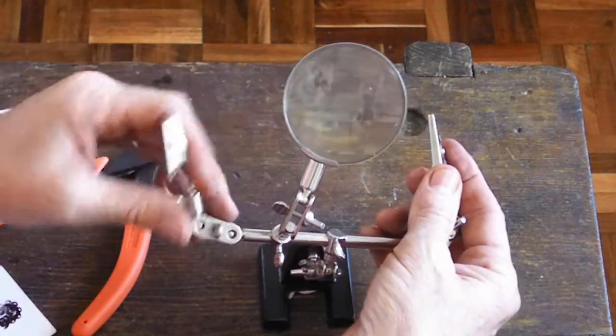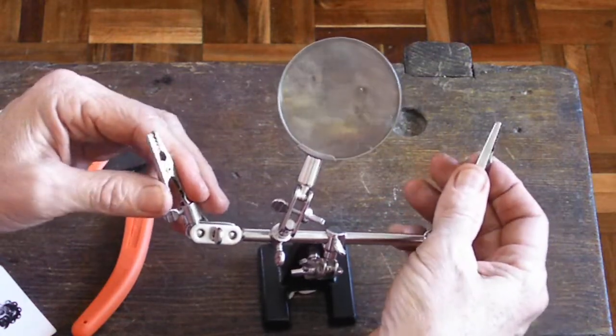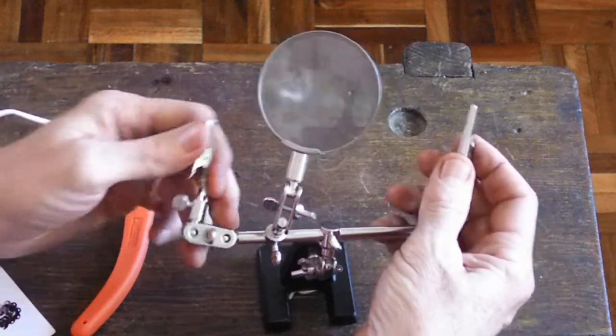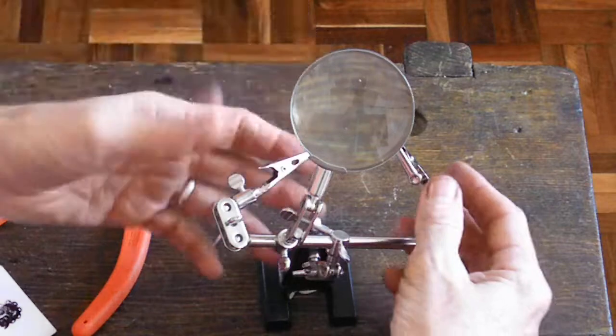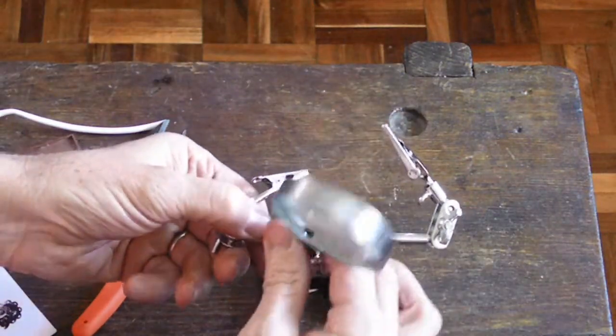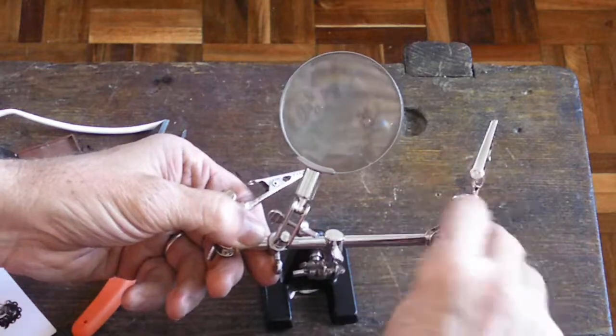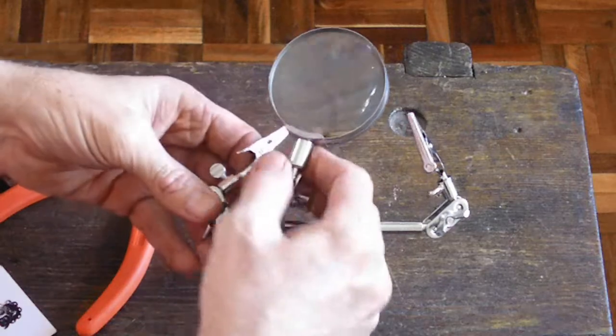As we look closely, we can see it's got all movable joints. So we've got two of these little clips on the end that you can put things in and put it underneath the magnifying glass if you need to see better. All of these joints can move around and you can tighten it if you've got something heavier in there.